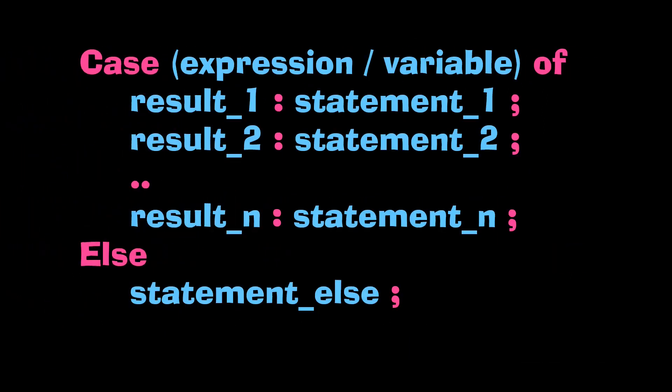In cases where you can write statements of multiple types, we can use a single case statement which makes the operation easier. This is the syntax of the case statement. First, write 'case', inside the parentheses write the expression or a variable, then the reserved word 'of'. Under that, we write each possible result we can get with that expression, and after that we put a colon and write the command or code block to execute if that particular result comes up. After giving all the results, we give 'else' and write the statement to execute if the result wasn't among the above given results.